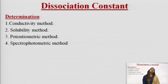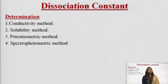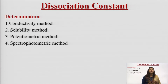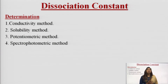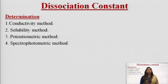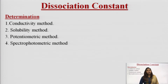Now, how can we determine the dissociation constant? The determination of dissociation constant can be done by four methods: first is conductivity method, second is solubility method, third is potentiometric method, and last is spectrophotometric method. I am going to discuss each one of these methods for the determination of dissociation constant.